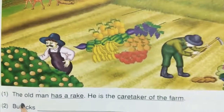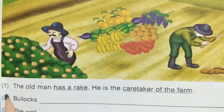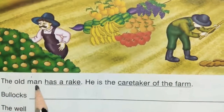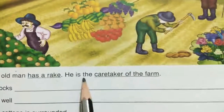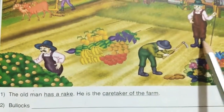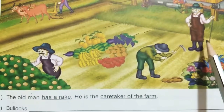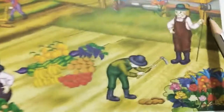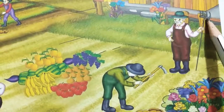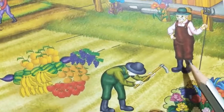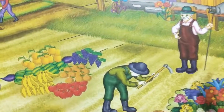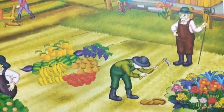This is the example, children, the first one. Let us read this one: The old man has a rake. He is the caretaker of the farm. So here the old man has a rake — this is called a rake, this is a tool. He is the caretaker of the farm. Caretaker means a person who takes care of the farm.